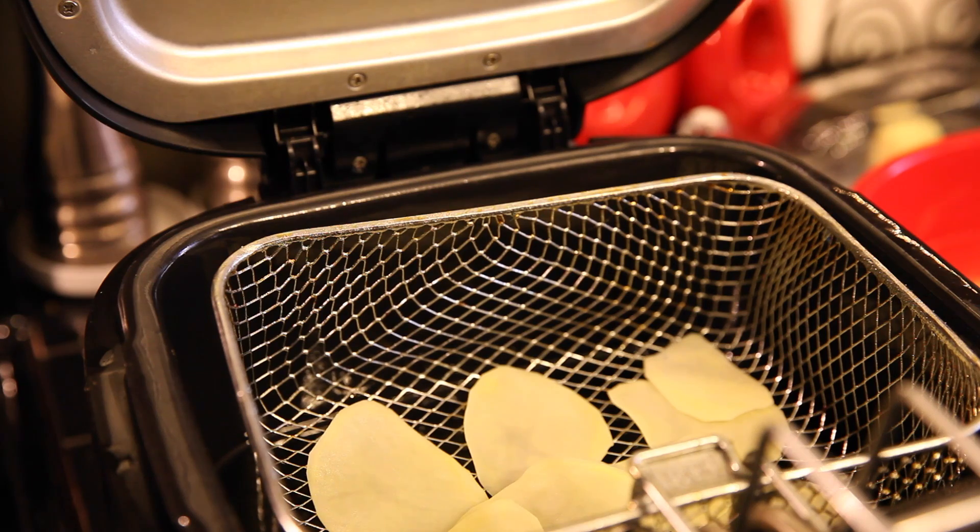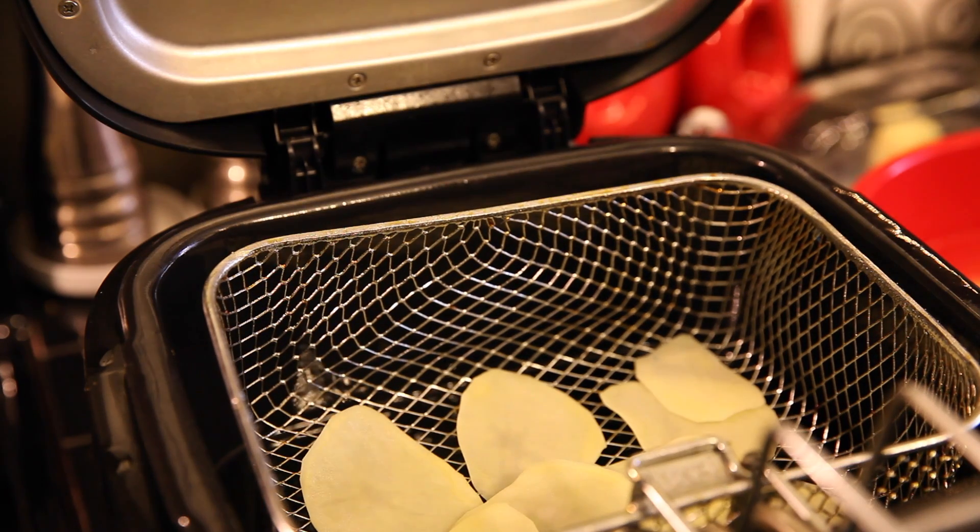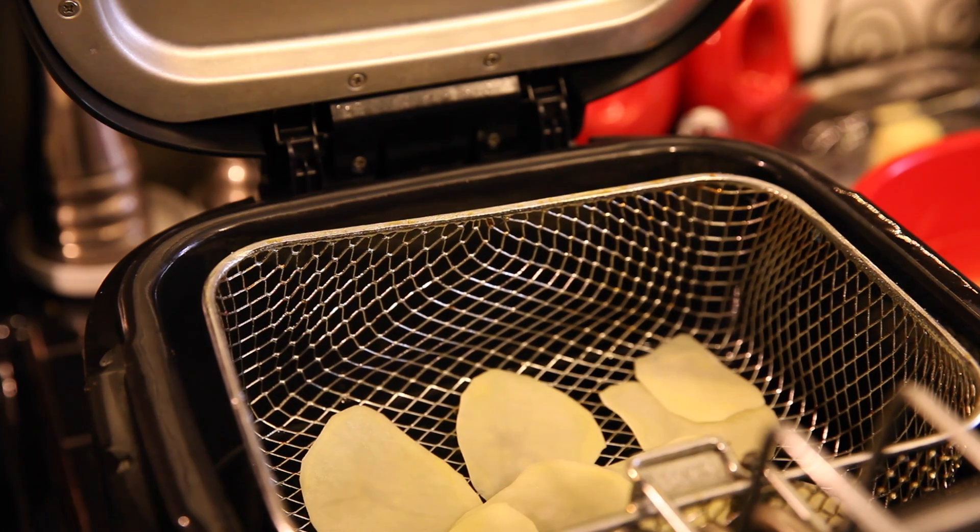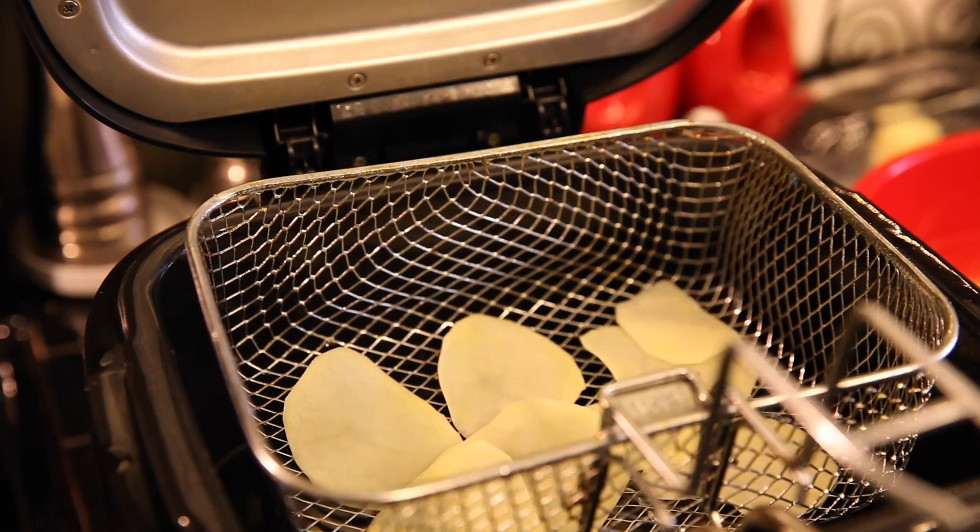Once the potatoes have dried you're going to drop them into a fryer at 300 degrees. You can also do this on your stove top in a cast iron skillet for approximately three minutes.